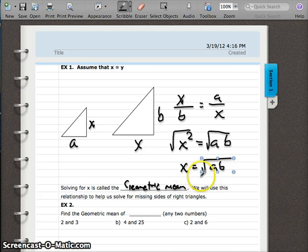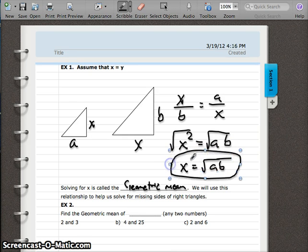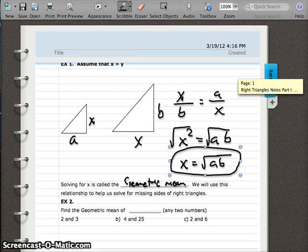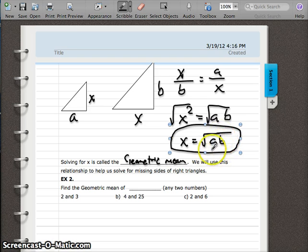And so what ends up happening is getting this geometric mean, this situation right here, that's what it's called, geometric mean. And we can do that with any two numbers. So a and b can be any two numbers. As long as we take the square root of those, we get the geometric mean.